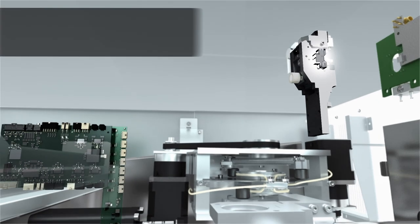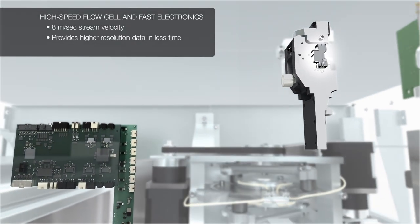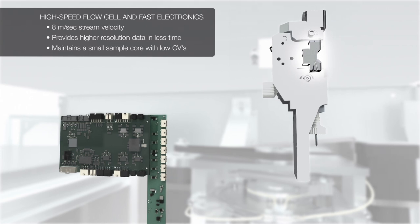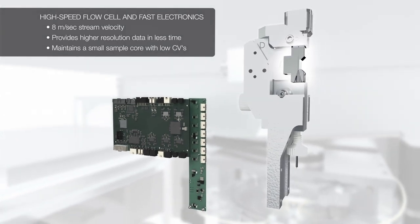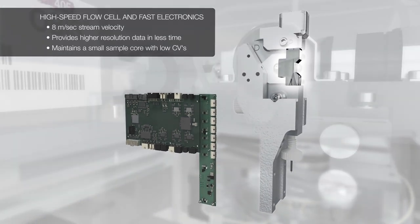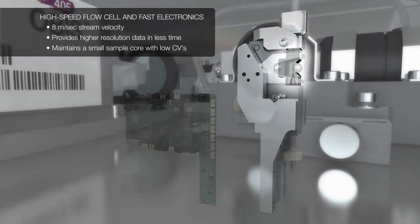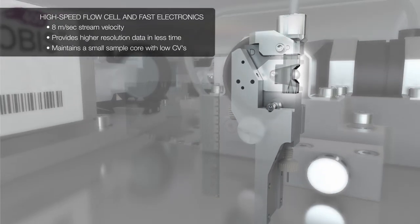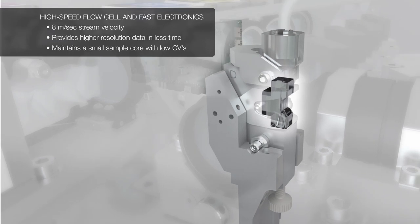The ZE5's high-speed flow cell and fast electronics allow you to generate better resolution data in less time. At eight meters per second, the flow cell operates at twice the stream velocity of comparable systems, allowing it to maintain a tight sample core at higher flow rates.